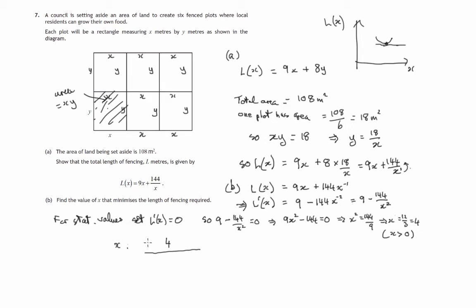And let's look at values just to the left of 4 and just to the right of 4 and we'll look at L dashed of x and see whether it's positive or negative. Now we know when we put 4 into L dashed of x, that's this expression here.